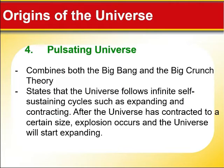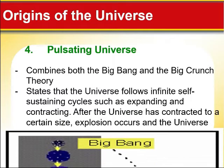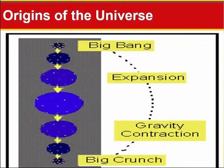The fourth theory is the Pulsating Universe Theory. According to this theory, it's actually the combination of the Big Bang and the Big Crunch Theory. The Big Bang expands and the Big Crunch compresses, so it's a combination of both. There is an instance of big bang expansion followed by big crunch contraction. It's a continuous, cyclic process.